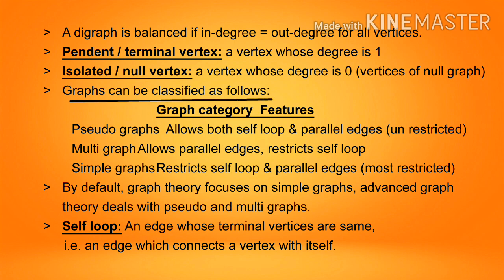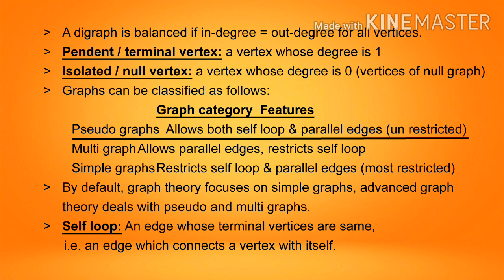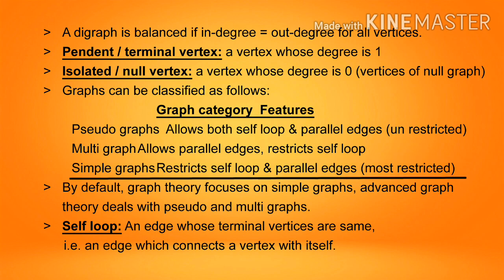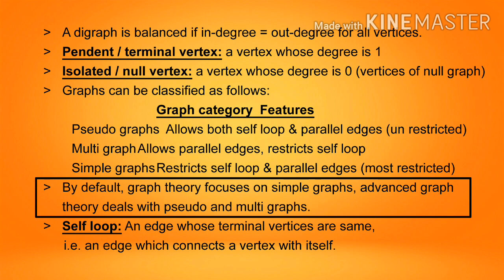Graphs can be classified as follows. Pseudographs allow both self-loops and parallel edges — unrestricted. Multi-graphs allow parallel edges but restrict self-loops. Simple graphs restrict both self-loops and parallel edges and are the most restricted. By default, graph theory focuses on simple graphs; advanced graph theory deals with pseudo and multi-graphs.